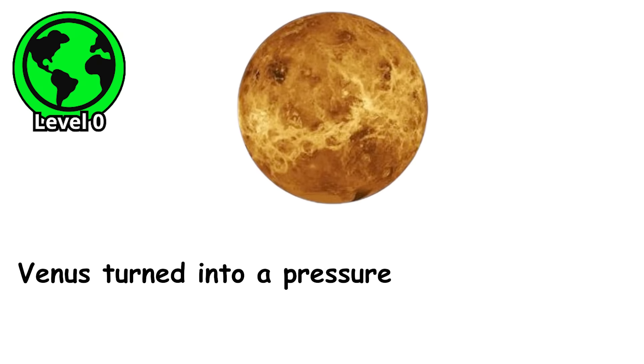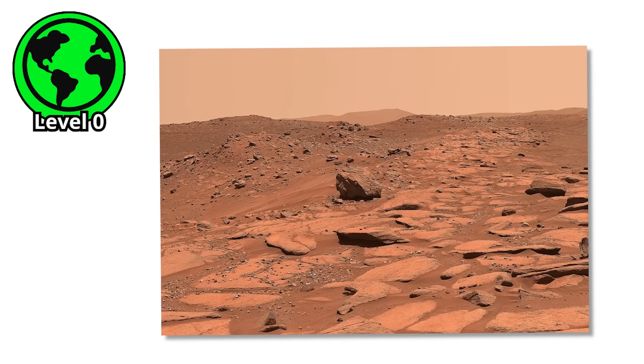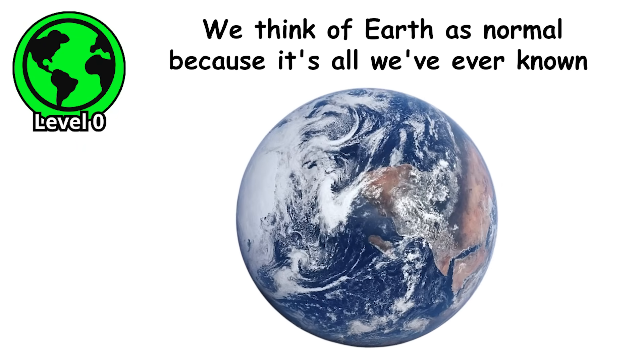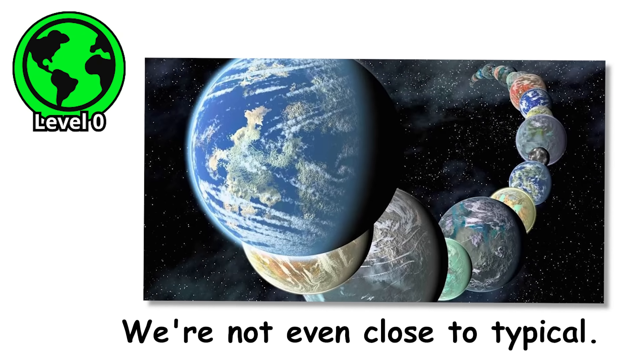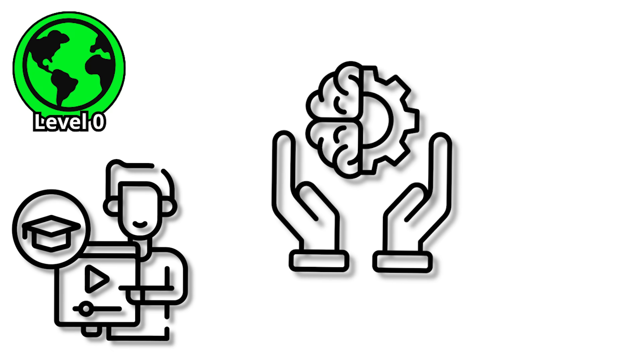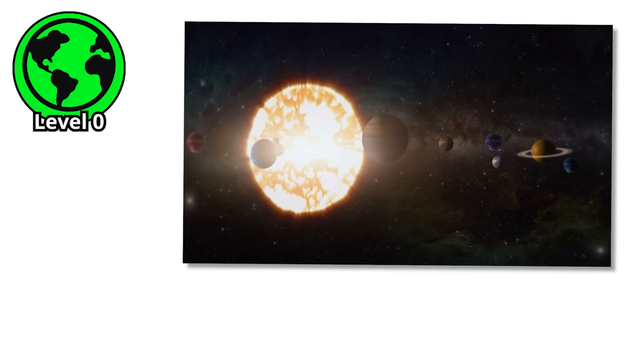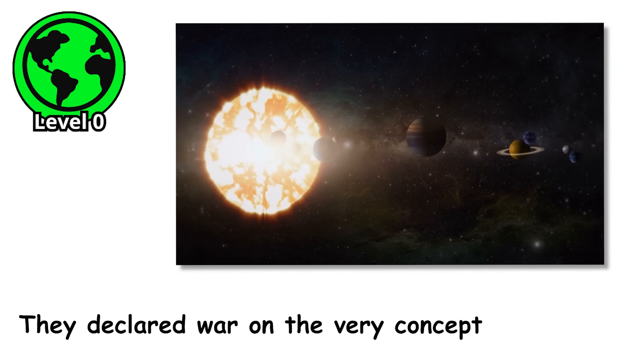Venus turned into a pressure cooker from hell. Mars lost its atmosphere and became a frozen wasteland. Mercury is basically a sun-blasted cinder with delusions of grandeur. We think of Earth as normal because it's all we've ever known. But in the grand cosmic lottery of planetary types, we're not even close to typical. We're at the tutorial level, the training wheels before the universe shows you what it's really capable of. But if you think Venus is bad, you haven't seen anything yet.